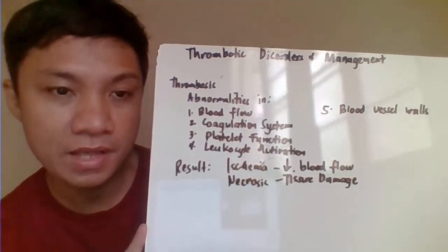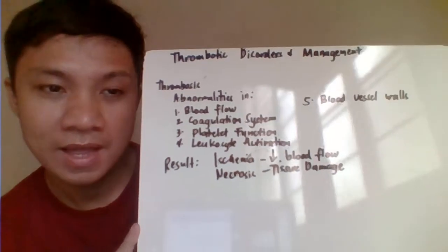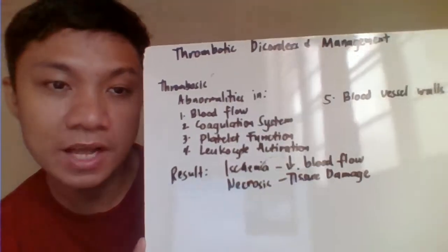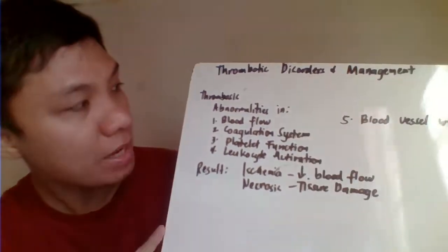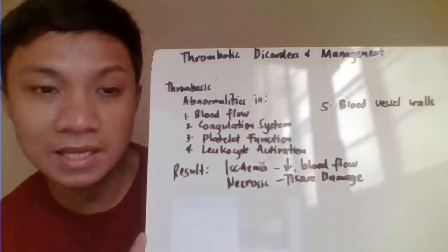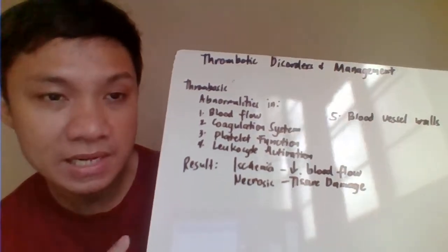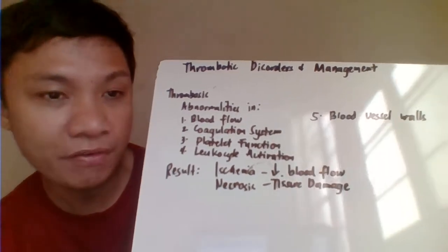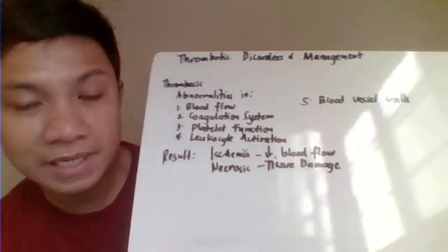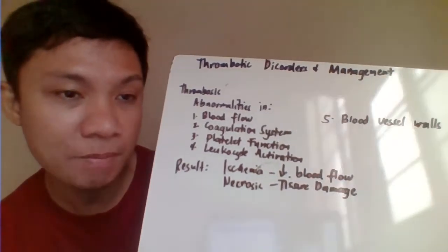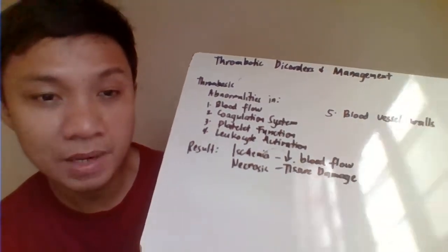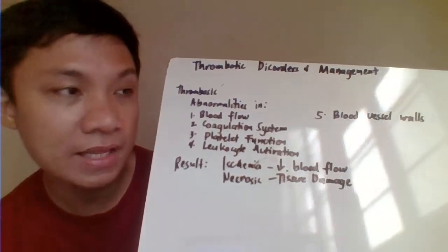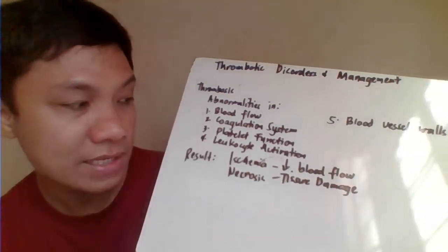Today we're going to discuss all about thrombotic disorders and their management, including the different laboratory tests that help us diagnose thrombosis. Thrombosis is the inappropriate, unregulated formation of a fibrin clot, associated with abnormality in the blood vessel wall, over-activation of coagulation factors, platelet functions, and defective fibrinolysis system.